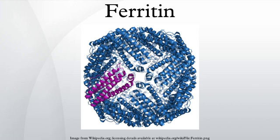Mitochondrial ferritin has many roles pertaining to molecular function. It participates in ferroxidase activity, binding, iron-ion binding, oxidoreductase activity, ferric iron binding, and metal-ion binding as well as transition metal binding. Within the realm of biological processes, it participates in oxidation-reduction, iron-ion transport across membranes, and cellular iron-ion homeostasis.